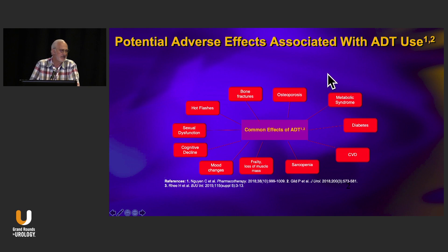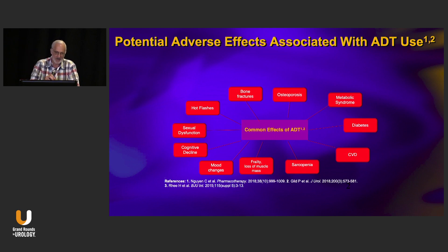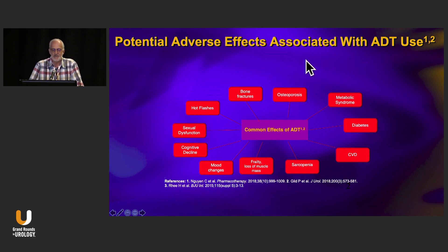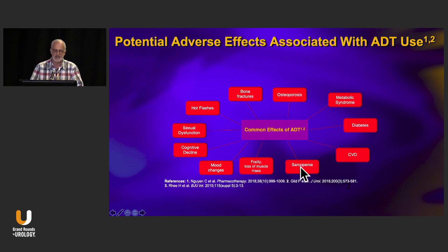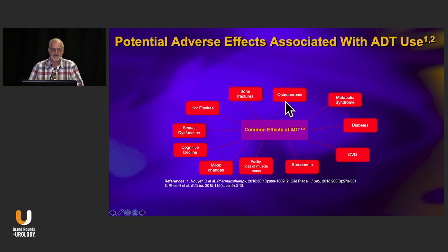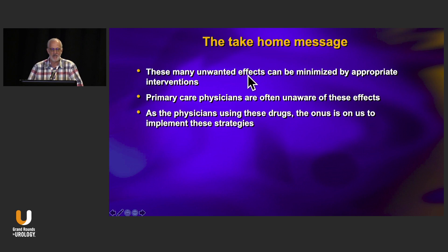One of the key messages is that there are a lot of unwanted effects that you can ameliorate. As someone putting a patient on ADT, it's your responsibility to look after these, because in many cases family doctors either aren't interested or may not be knowledgeable. These unwanted effects are well known: metabolic syndrome, insulin resistance, hyperglycemia, cardiovascular disease, sarcopenia, frailty, loss of muscle mass, cognitive changes, sexual dysfunction, hot flashes, loss of bone mineral density, and fragility fractures.